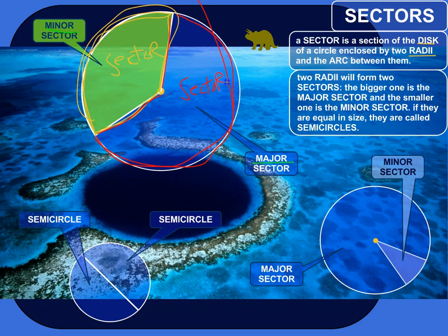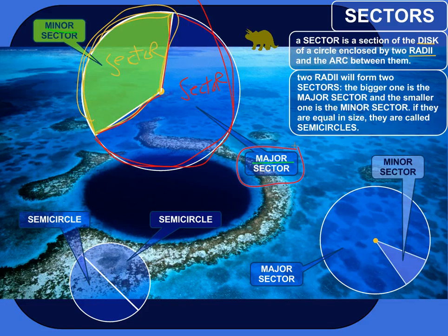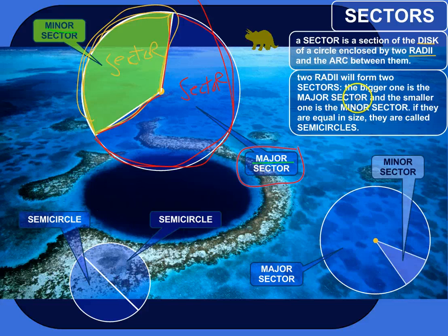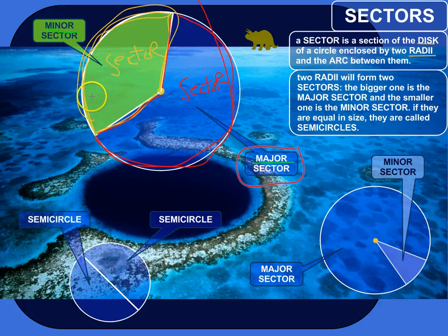The bigger sector is called the major sector — major just means big, like the major leagues versus the minor leagues, or the constellation Ursa Major, which means the big bear, also called the Big Dipper. And the smaller sector is called the minor sector, like the minor leagues, or Ursa Minor, the little bear, also called the Little Dipper.